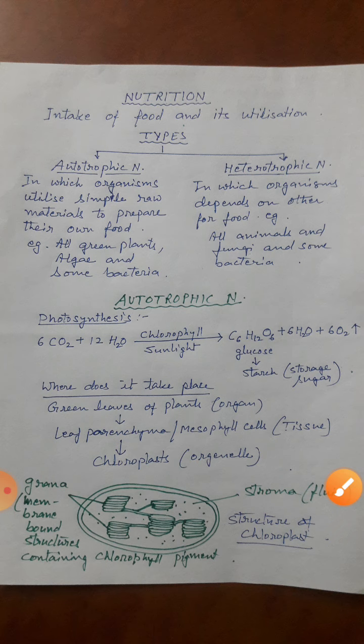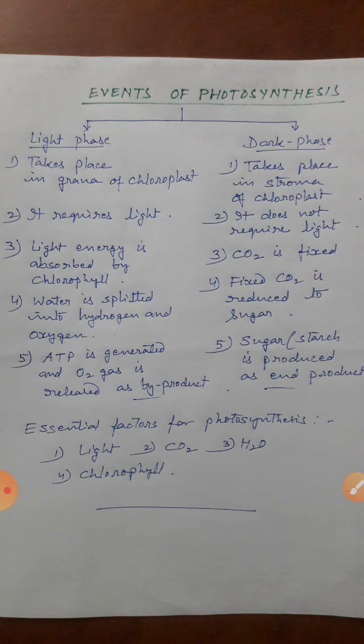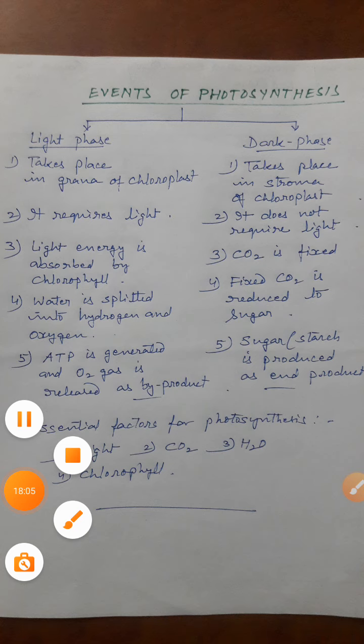To yeh ho gaya nutrition ka first part, that is autotrophic nutrition, jismein hum log padhte hain photosynthesis. To autotrophic nutrition khatam hua. Next class mein hum log padhenge how to prove that light is essential for photosynthesis and carbon dioxide is essential for photosynthesis — yeh dono hum padhenge as practical part of this chapter. To abhi ke liye itna hi — yeh sab aap notes utar lena. Okay, that's all.